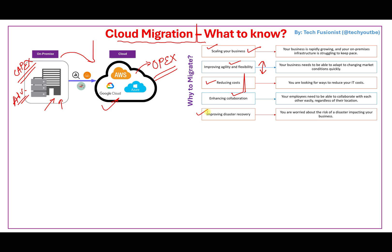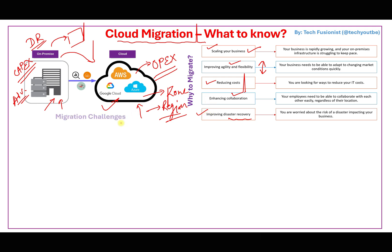Another key feature is improved disaster recovery. In an on-prem environment, you need a physical DR location, data center, additional servers, hosted services, and redundant staff. In the cloud, DR sites are accessible from anywhere, managed by the same team, and you just configure the level of redundancy you want — zone level or region level — and it's done in minutes.